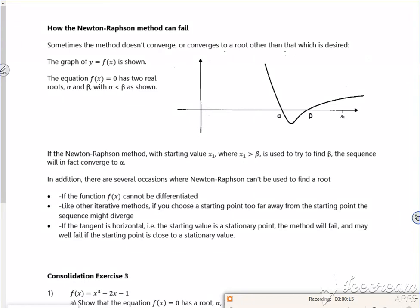So it's got two roots, alpha and beta. So if it starts at something bigger than beta, it'll be fine. But what if I started in between, like say, like they've got here?